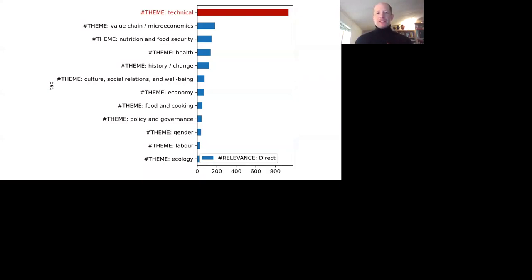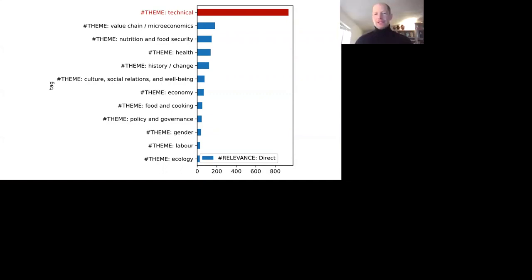As Eric mentioned earlier, there is a great imbalance in the literature on dried fish. The previous image showing the thematic representation across the literature did not include the technical theme. Now that we've added the technical theme, you can see how dramatically it dominates the global literature on dried fish. In this part of the presentation, there is a bit of a paradox: even though the technical literature is highly dominant, we're actually not going to devote as much time to it as Eric has just devoted to the other sub-themes.